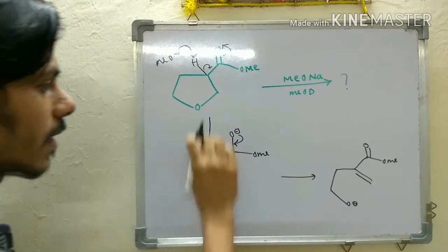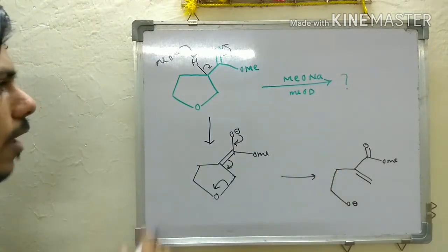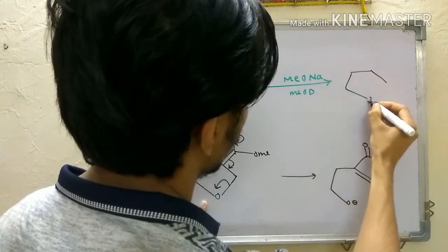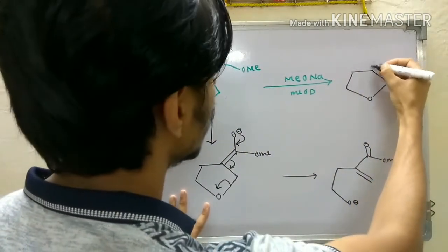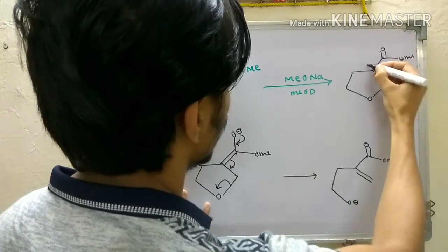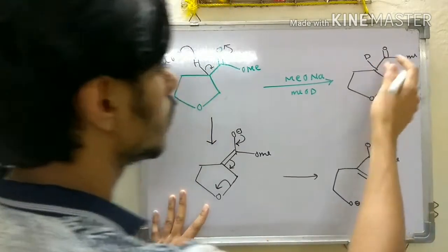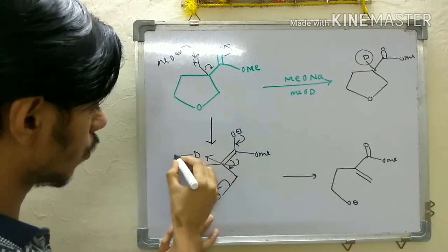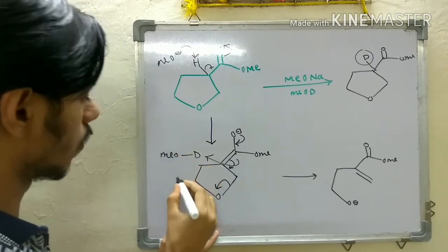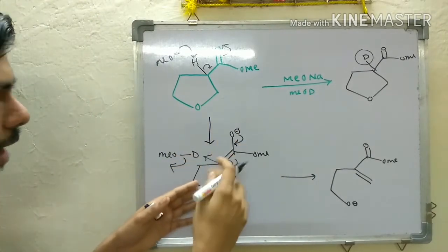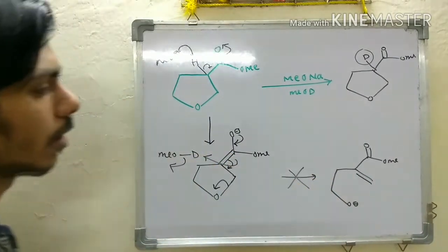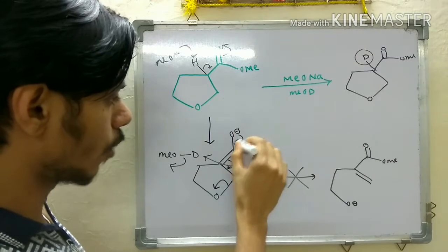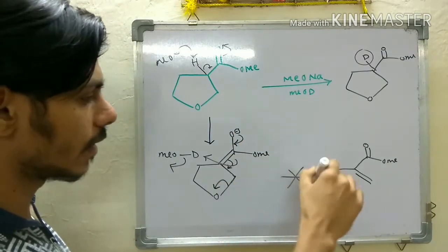So you expect to get this particular product, but what actually happens when you do this reaction in methanol-d is that you get deuterium incorporation. This means that after formation of the enolate, it takes a proton from other methanol-d molecules. So although this enolate has the apparent ability to cyclize, this step doesn't actually occur.